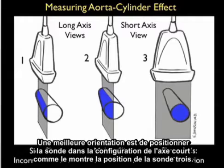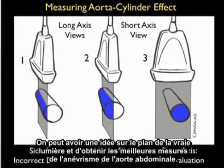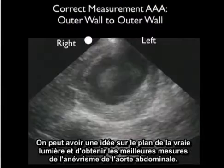A better orientation is to position the probe in the short axis configuration, as shown in probe position 3. One can then get a sense of the true lumen and get the best measurements of the abdominal aortic aneurysm.